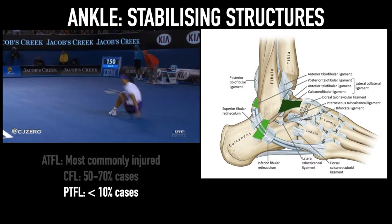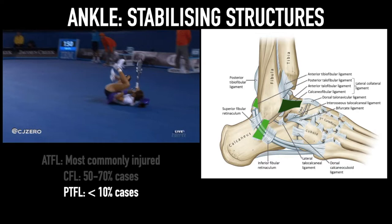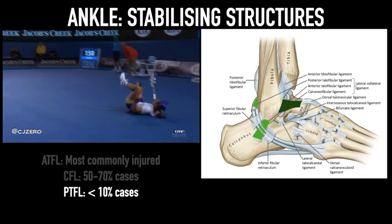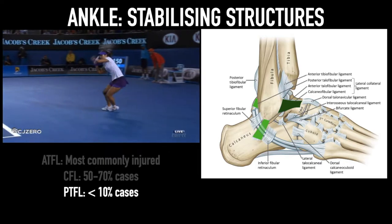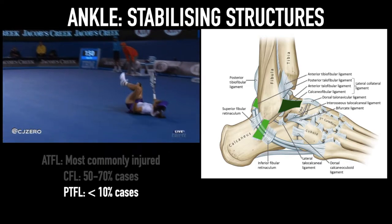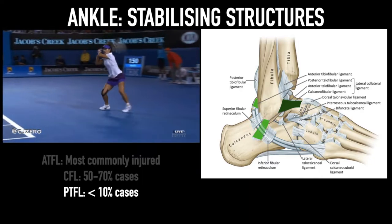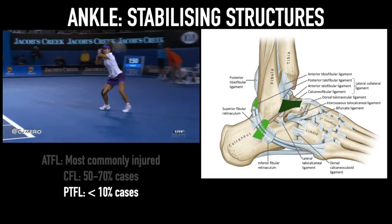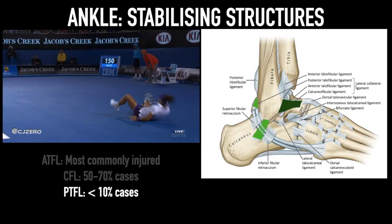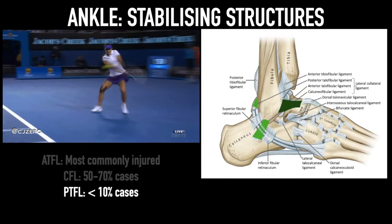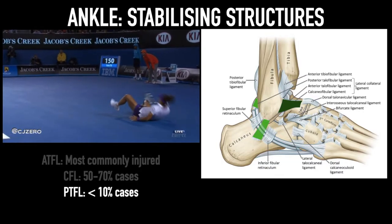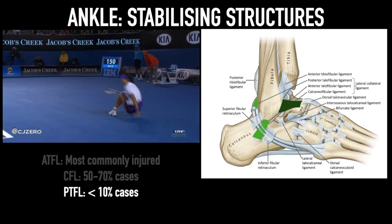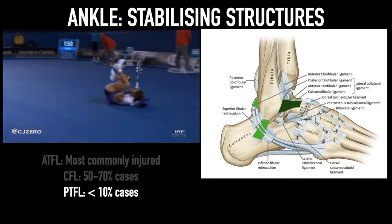ATFL is a horizontal structure, but whenever the ankle is plantar flexed, ATFL becomes vertical and it becomes the primary stabilizer of the ankle in plantar flexion. So it is mainly responsible for anterior-posterior stability of the ankle joint. Whenever ATFL is injured, mainly anterior-posterior instability occurs, whereas the calcaneofibular ligament is vertical when the ankle is dorsiflexed and gives mainly medial-lateral stability. So medial-lateral instability occurs when there is concomitant CFL injury along with the anterior-posterior instability due to ATFL injury.